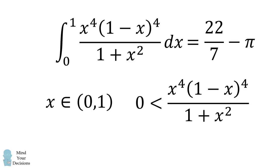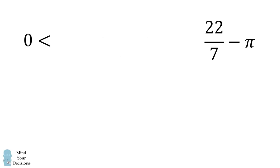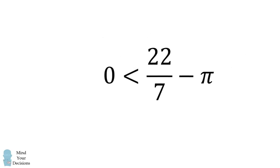So when we take the integral from 0 to 1 of a function that's strictly positive, we will get a strictly positive result. So we have shown that 22 over 7 minus pi is strictly positive, which means that 22 over 7 is greater than pi. And that's the answer.